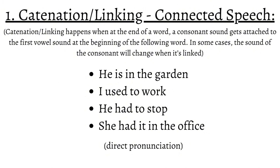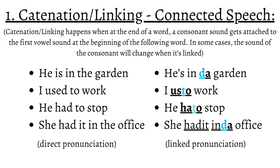Other examples with more practical context are: 'He is in the garden,' 'I used to work,' 'He had to stop,' 'She had it in the office.' While direct speech is extremely clear, it's not really how you would hear the sentences in connected speech. By using catenation, here is the linked pronunciation of each phrase: 'He is in the garden,' 'I used to work,' 'He had to stop,' 'She had it in the office.' The linked pronunciation forces letters to connect to one word and make a new sound. This is catenation in English connected speech, and it's by far the most common speech that you will hear almost everywhere in English conversations.